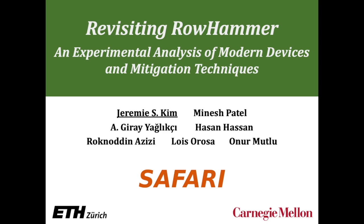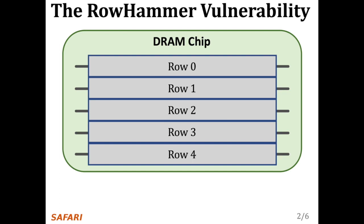In order to access data from a DRAM row, say row 2, the memory controller must first open or activate the row. After all requests are serviced from row 2, the memory controller must close or pre-charge the row in order to begin accessing data from another row. Due to an increase in cell-to-cell interference, as a likely result of increased cell-packing density, rapidly activating and pre-charging a DRAM row can result in bitflips in nearby rows.